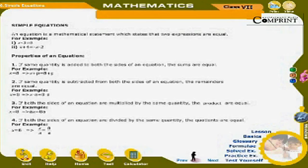Properties of an equation. 1. If the same quantity is added to both sides of an equation, the sums are equal. For example, x = 8 implies x + p = 8 + p. 2. If the same quantity is subtracted from both sides, the remainders are equal. For example, x = 8 implies x − a = 8 − a. 3. If both sides are multiplied by the same quantity, the products are equal. For example, x = 8 implies a × x = 8 × a.